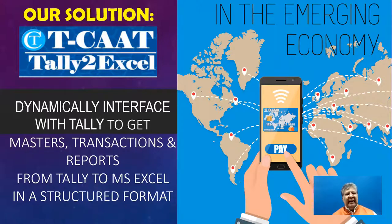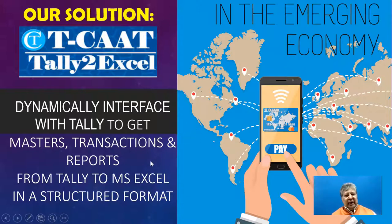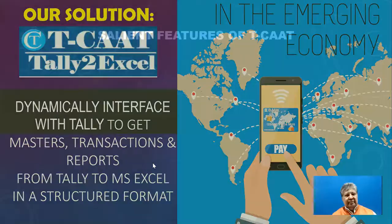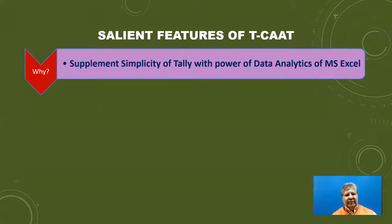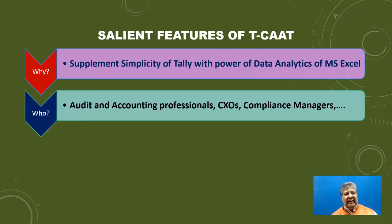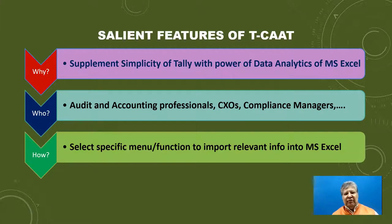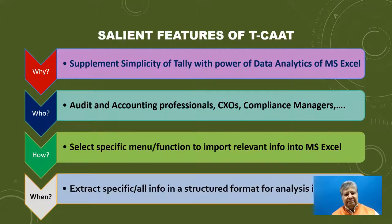TCAT stands for Tally to Excel. From Tally, you should be able to dynamically interface and export masters, transactions, and reports into MS Excel in a structured format. The salient features of TCAT: it supplements the simplicity of Tally with the power of data analytics in MS Excel; it can be used by audit and accounting personnel, CXOs, and compliance managers; and you can extract specific information in a structured format for further analysis.